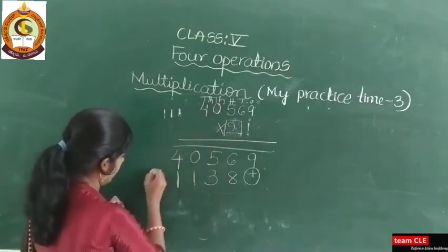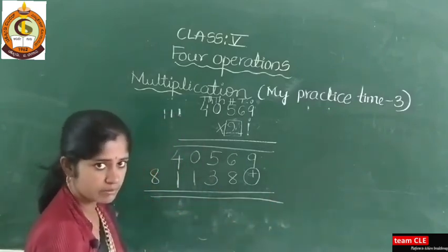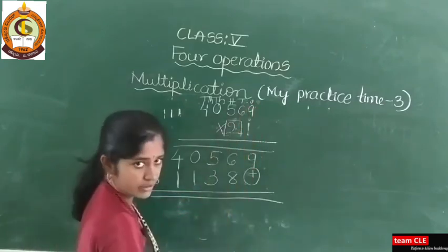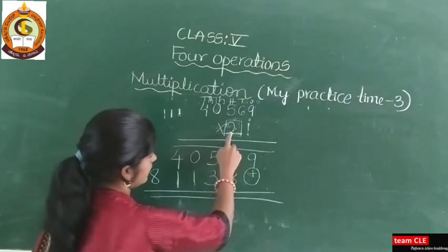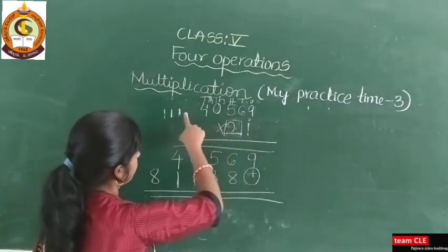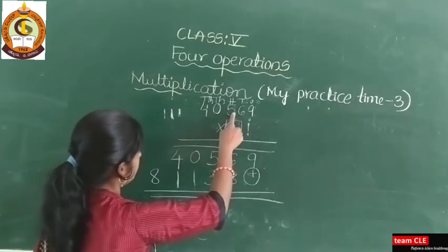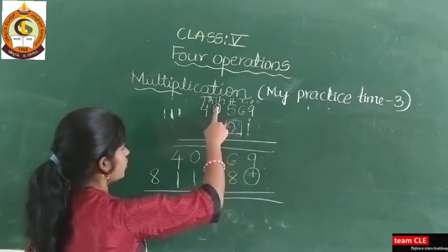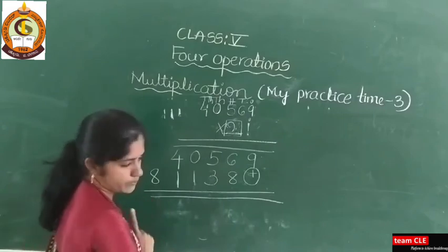Two fours are 8. So this is how you multiply. First time, multiply with 1. Next, the remaining term is 2. Two nines are 18, two sixes are 12 plus 1 is 13, two fives are 10 plus 1 is 11, two into zero is zero plus 1 is one, two fours are 8.